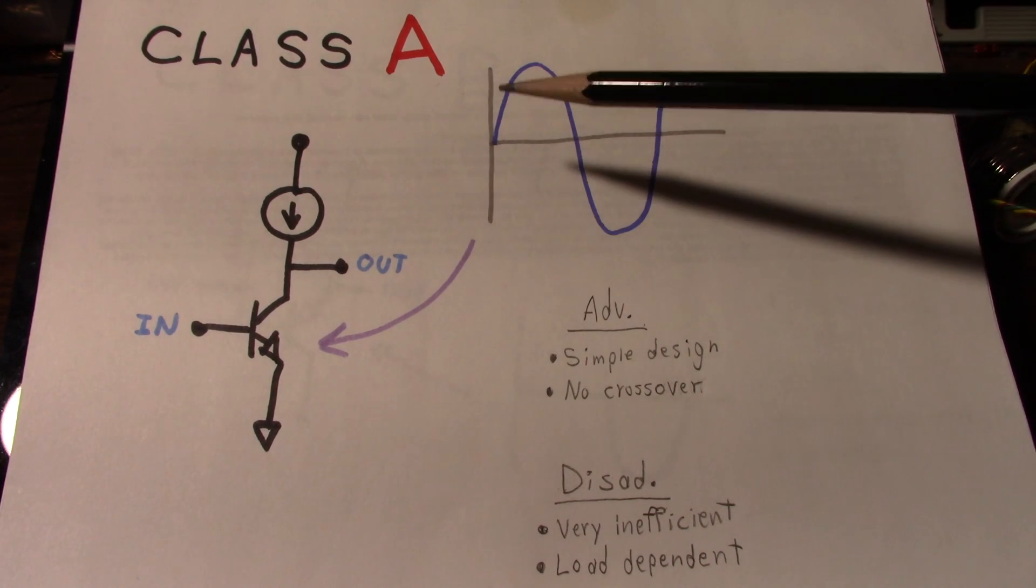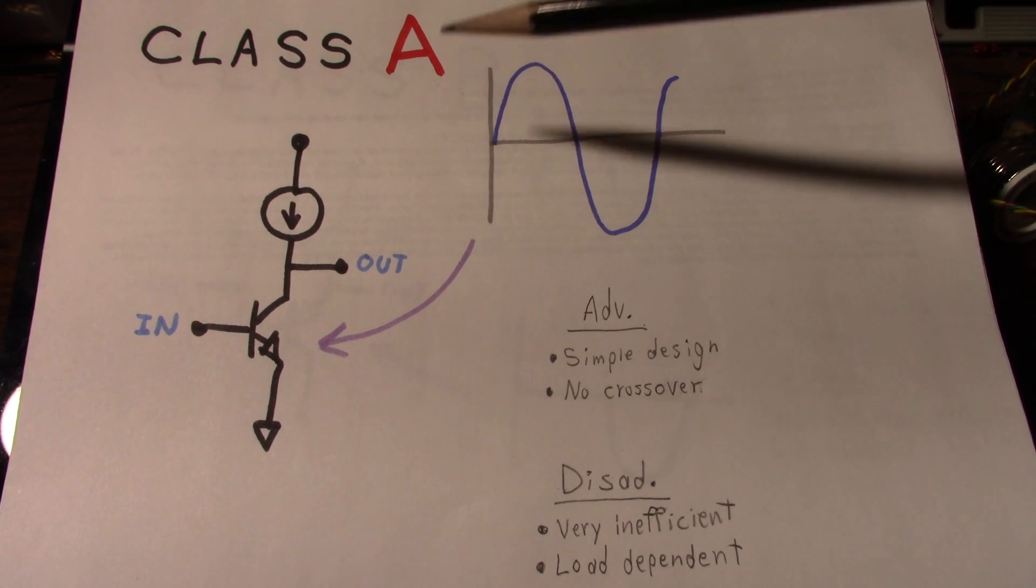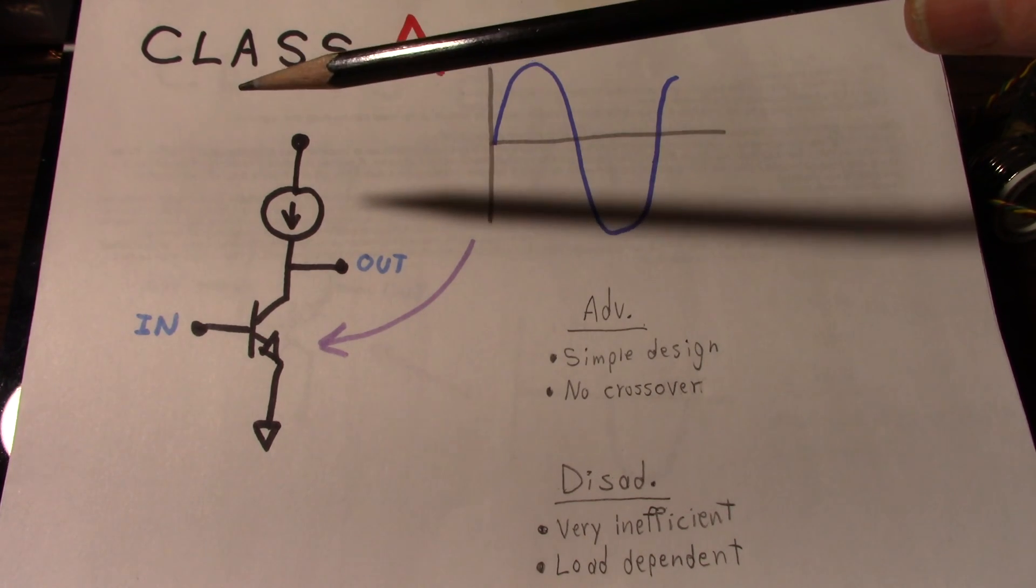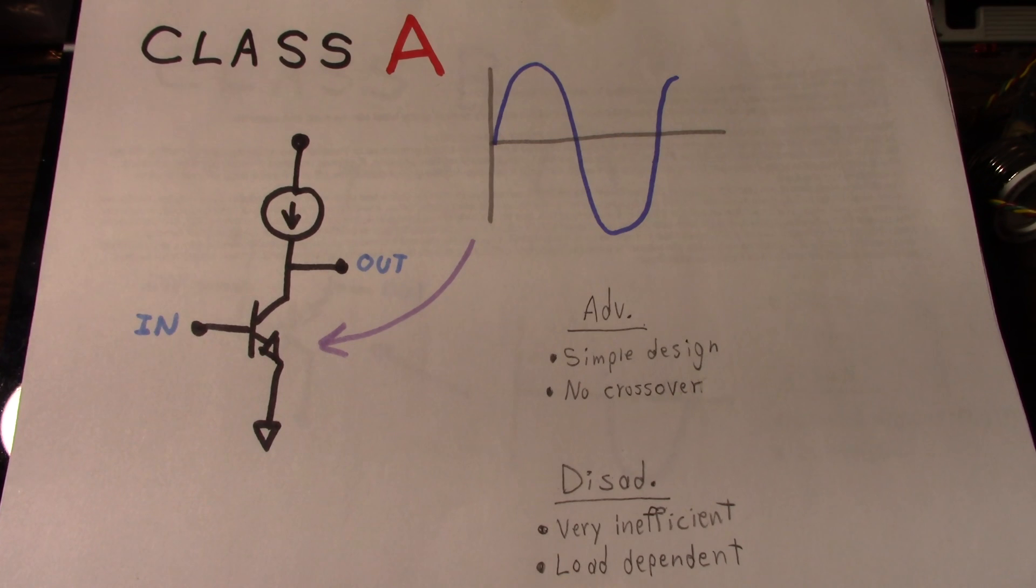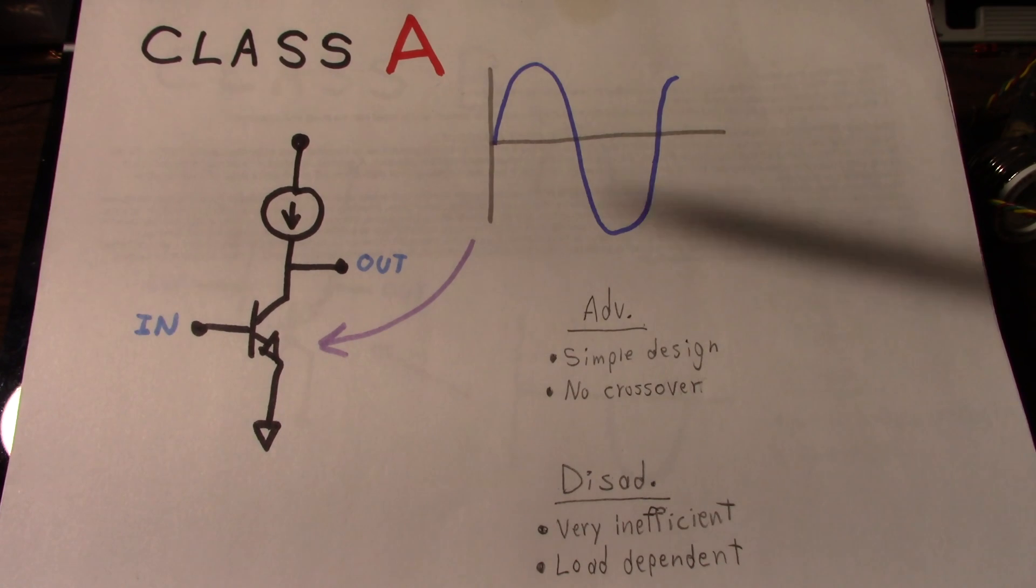Now when I'm talking about the efficiency of an amplifier, I'm talking about the maximum output power just before clipping divided by the input power from the power supply. So for example, with the class A amp, if I wanted to design a 20 watt amplifier, due to its low efficiency I might need a hundred watts of input power.